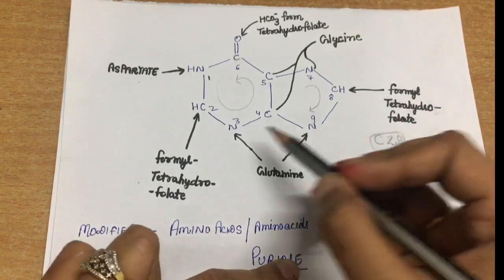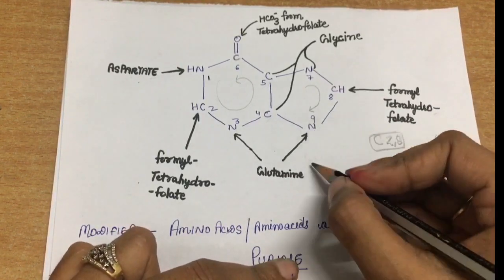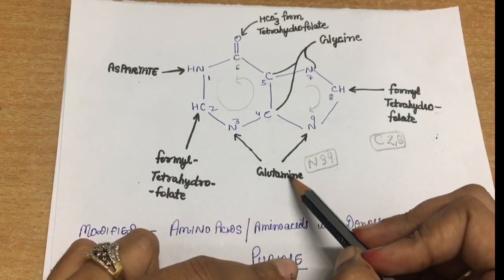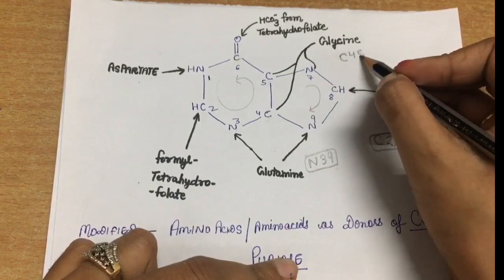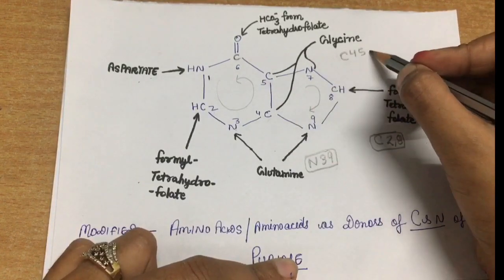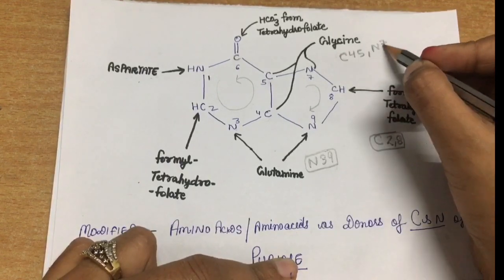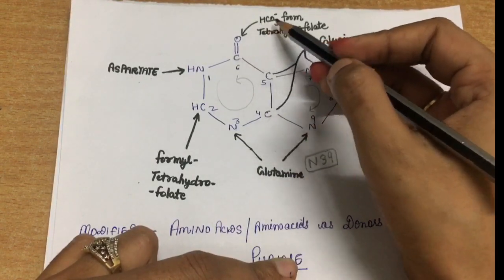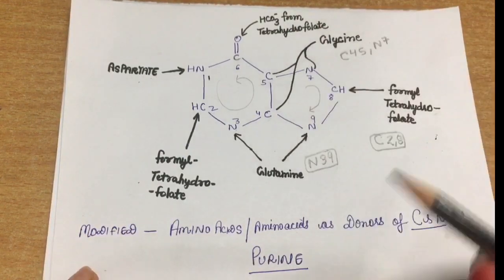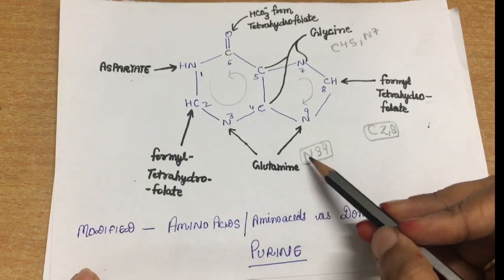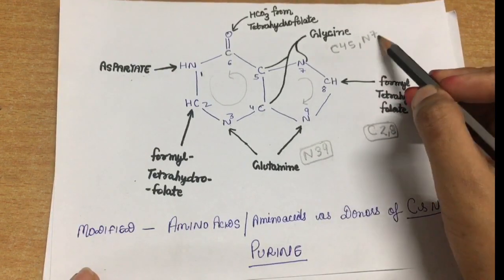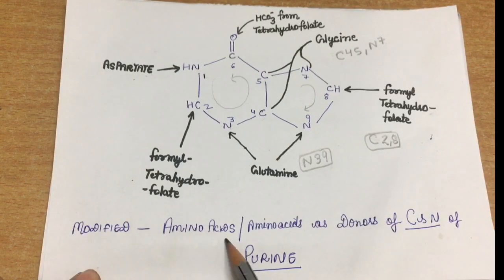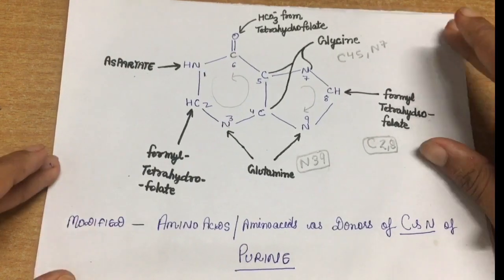The donor for C2 and C8 is formyl-tetrahydrofolate. Nitrogen 3 and nitrogen 9 — N3 and N9 — are donated by glutamine. Carbon 4, carbon 5, and nitrogen 7 — C4, C5, and N7 — are donated by glycine. Carbon 6 is given by bicarbonate. To remember: N3, N9 from glutamine; C2, C8 from formyl-THF; C4, C5, N7 from glycine. These are the amino acids and modified donors of carbon and nitrogen in the purine ring.